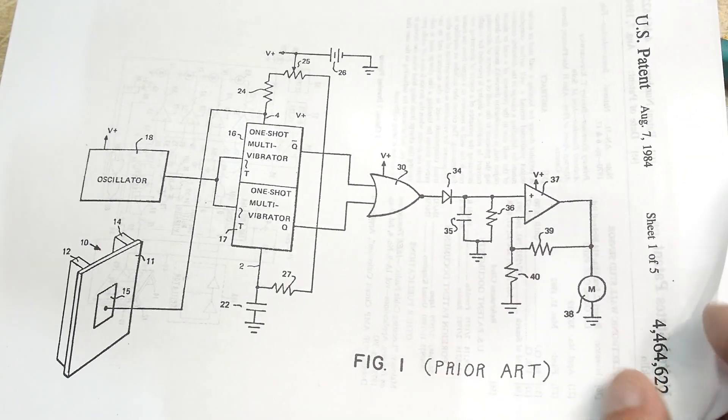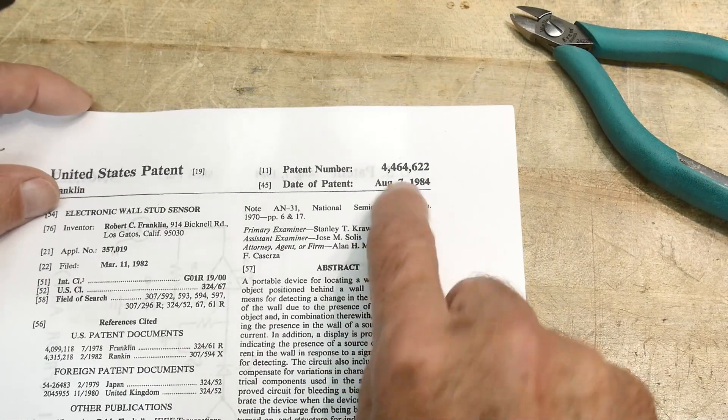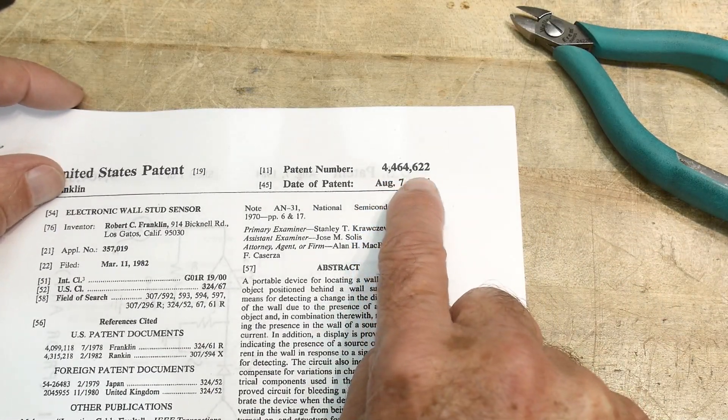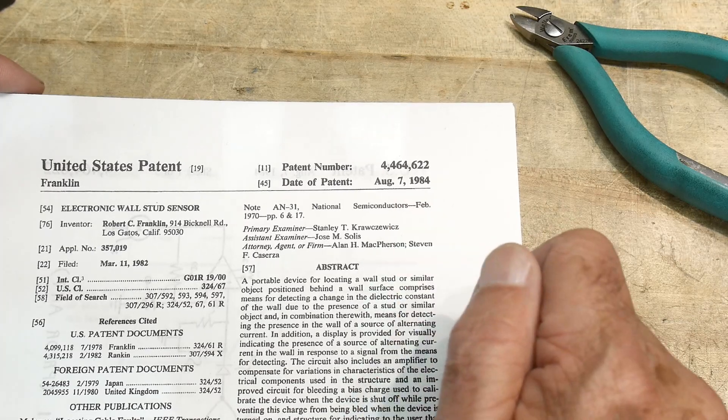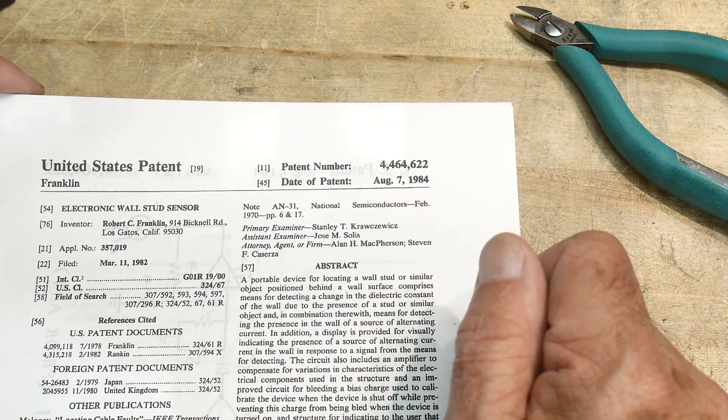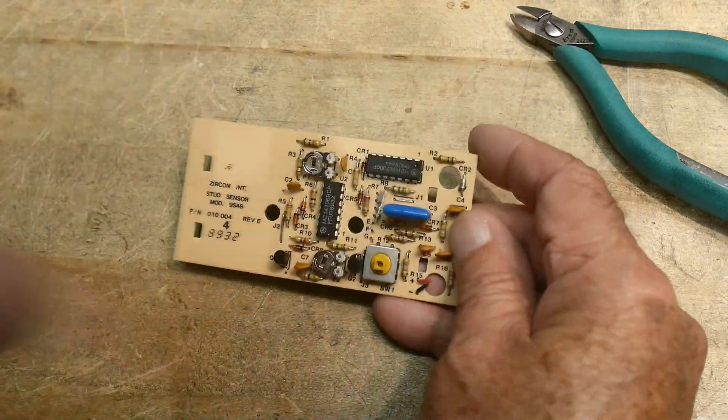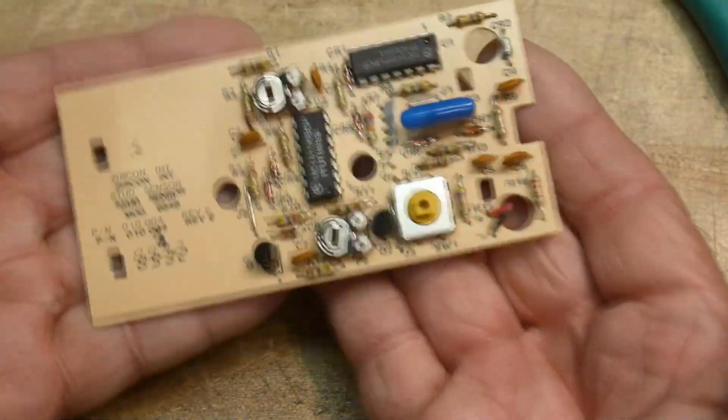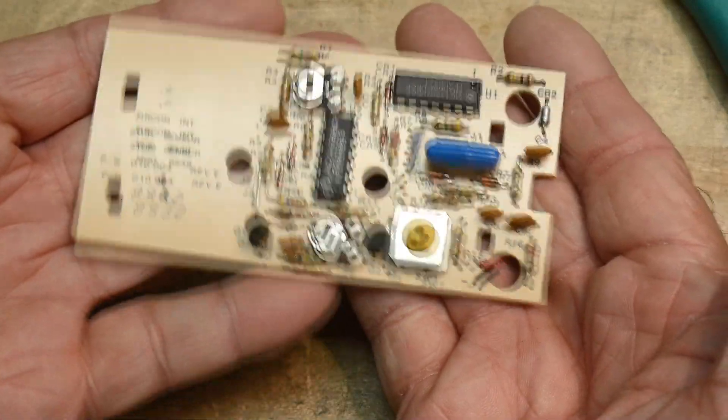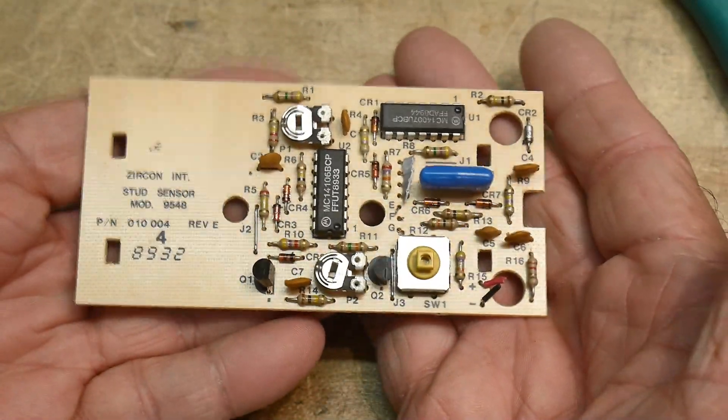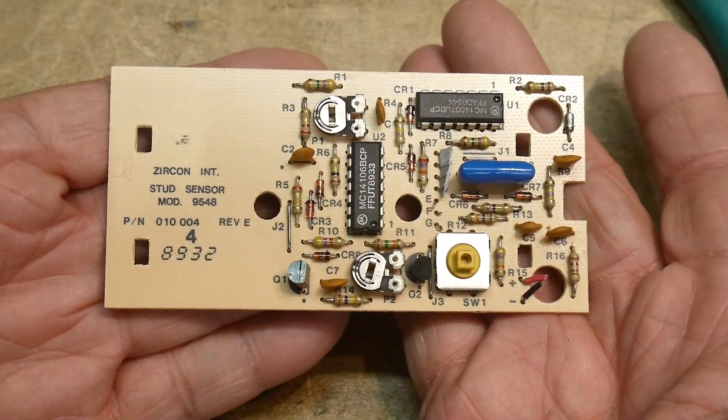If you're interested in reading more about these things, the patent number is 4,464,622, 1984. And yeah, so there you go. Anyway, I just thought it'd be fun to take a look inside the old school stud finder. Pretty cool.